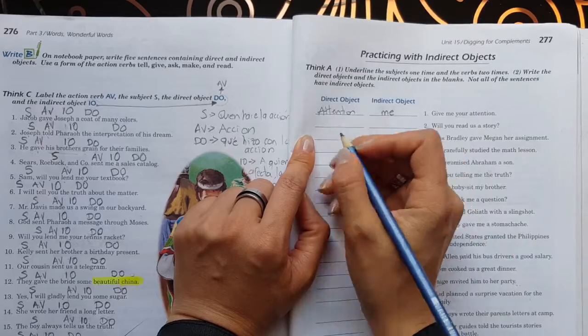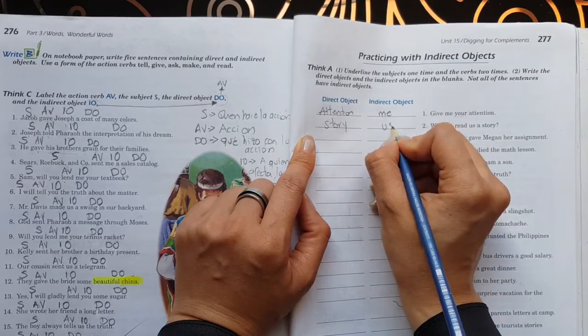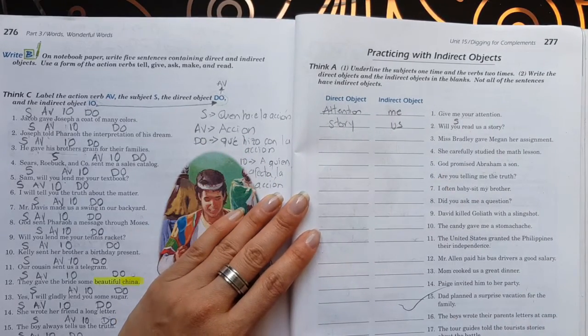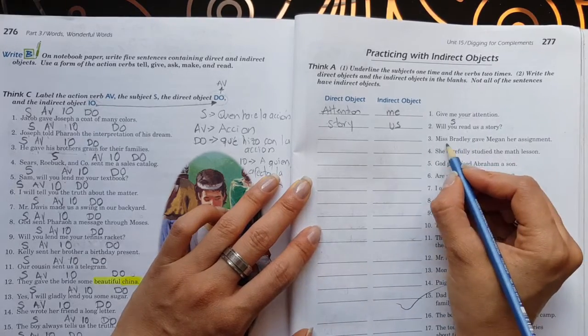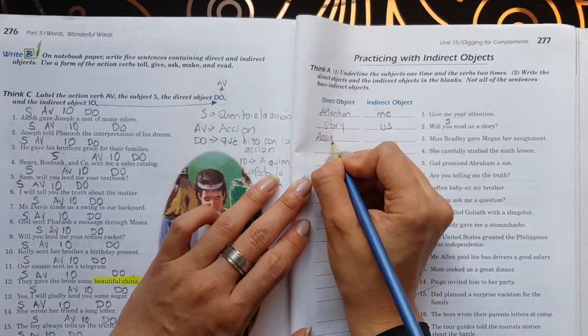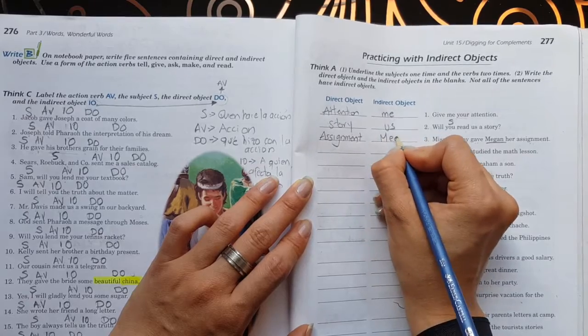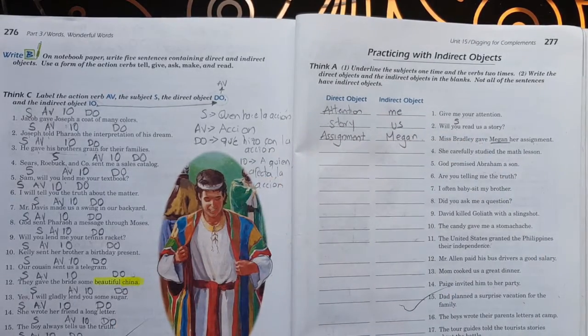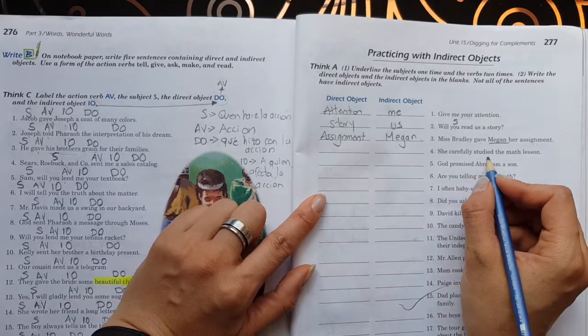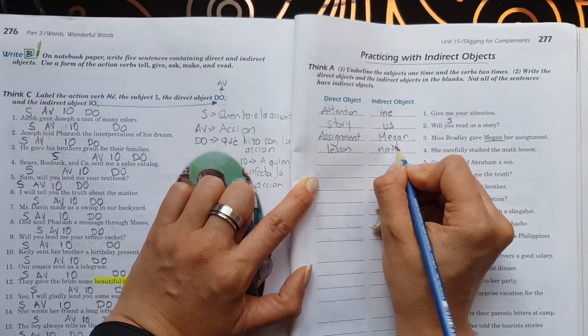¿Podrías leernos una historia? Entonces. ¿Podrías leer qué? Una historia. ¿Y a quién se la va a leer? A nosotros. ¿A quién es el sujeto? You es el sujeto. Número tres. Mrs. Bradley gave Megan her assignment. Entonces. Mrs. Bradley le dio. ¿Qué le dio? Una asignación. Assignment. Vamos a escribirla acá. ¿Y a quién se lo dio? A Megan. Número cuatro. She carefully studied the math lesson. Entonces. Ella cuidadosamente estudió. ¿Qué estudió? La lección. ¿De qué? De matemáticas.